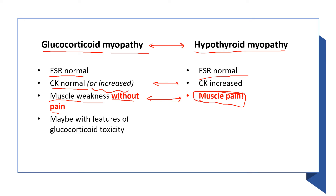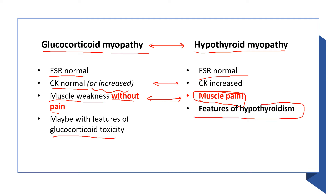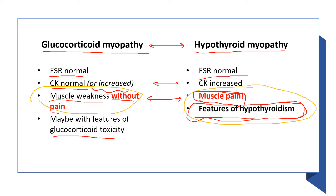In some case questions you may also see features of glucocorticoid toxicity, like what we see in Cushing syndrome. In hypothyroid myopathy, you will always see features of hypothyroidism, like constipation and low energy. Step 2 loves to ask questions about hypothyroid myopathy with features of hypothyroidism. So it is really important to know these two — glucocorticoid myopathy is not associated with pain, but hypothyroid myopathy is.